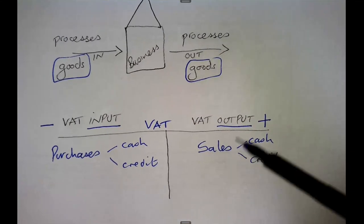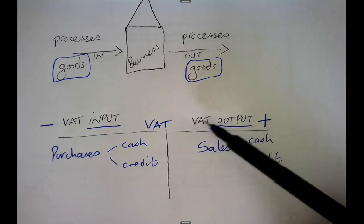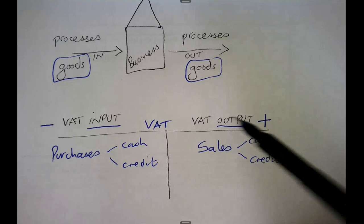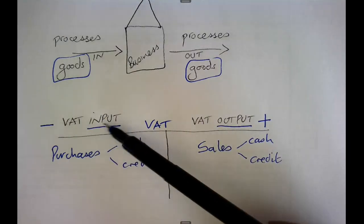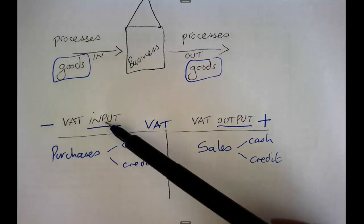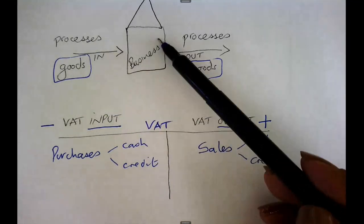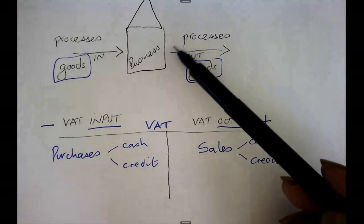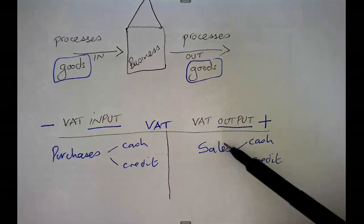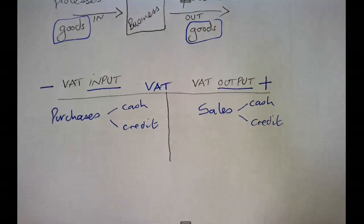Before you can calculate the amount due to SARS, you have to understand the difference between output VAT and input VAT. Input is stuff coming into the business — therefore it's purchases. Output is stuff flowing out of the business — therefore it is sales.